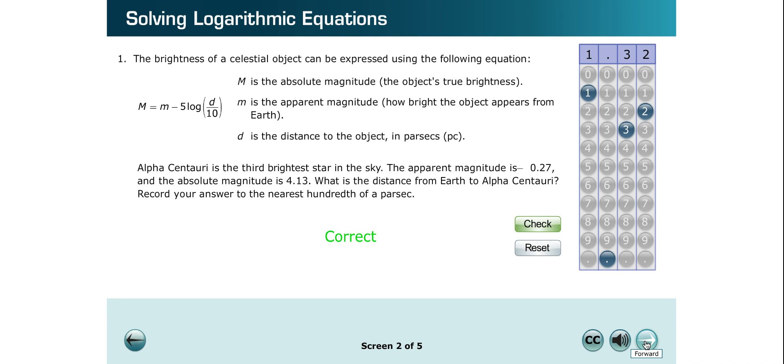The distance from Earth to Alpha Centauri is approximately 1.32 parsecs.